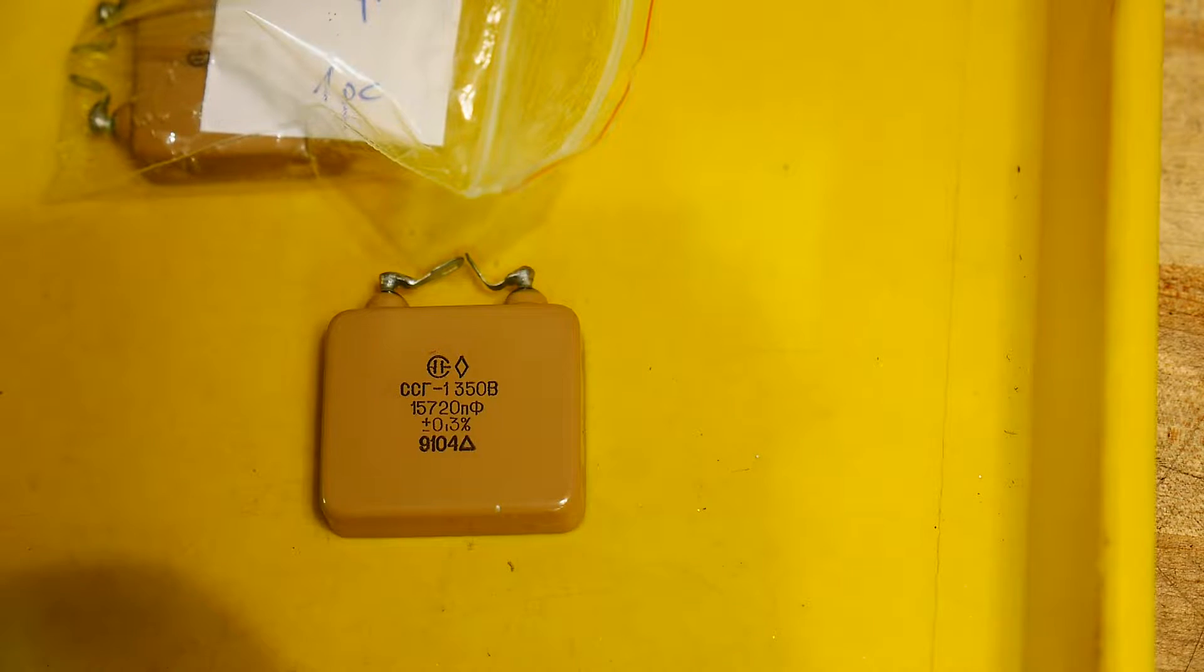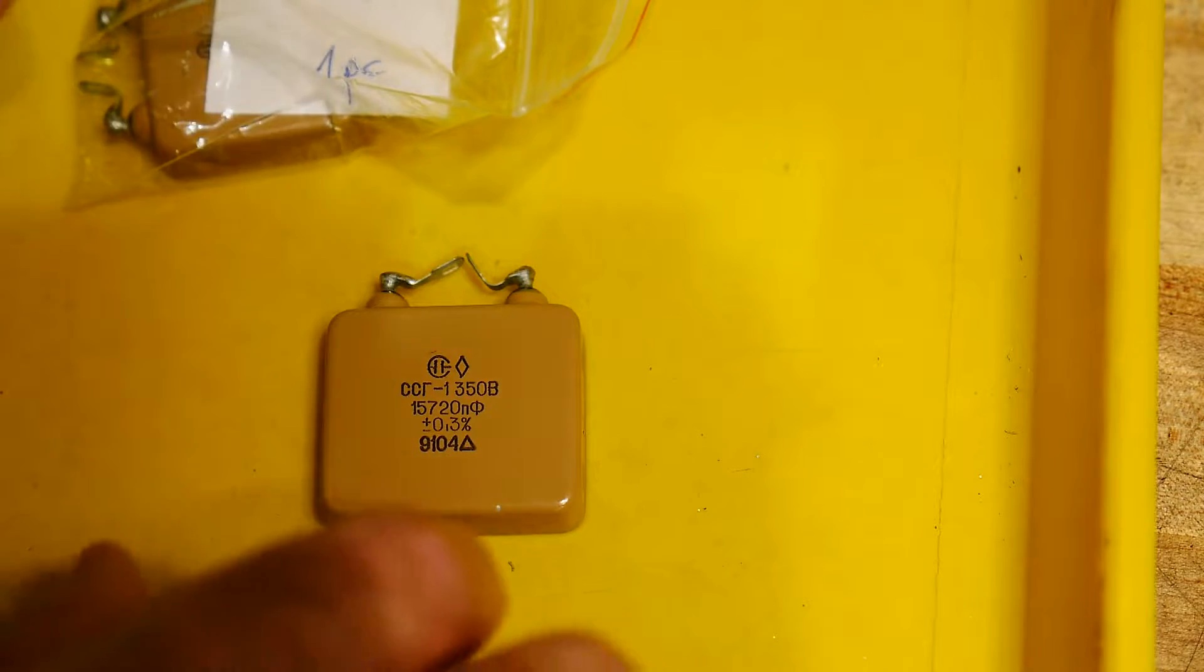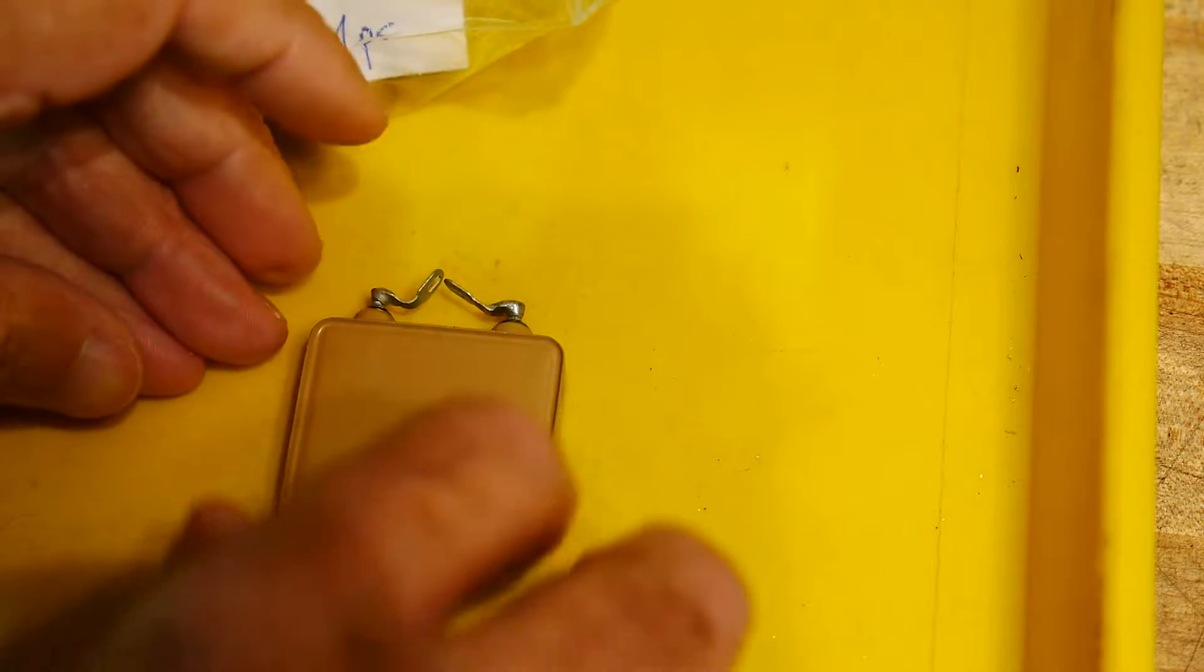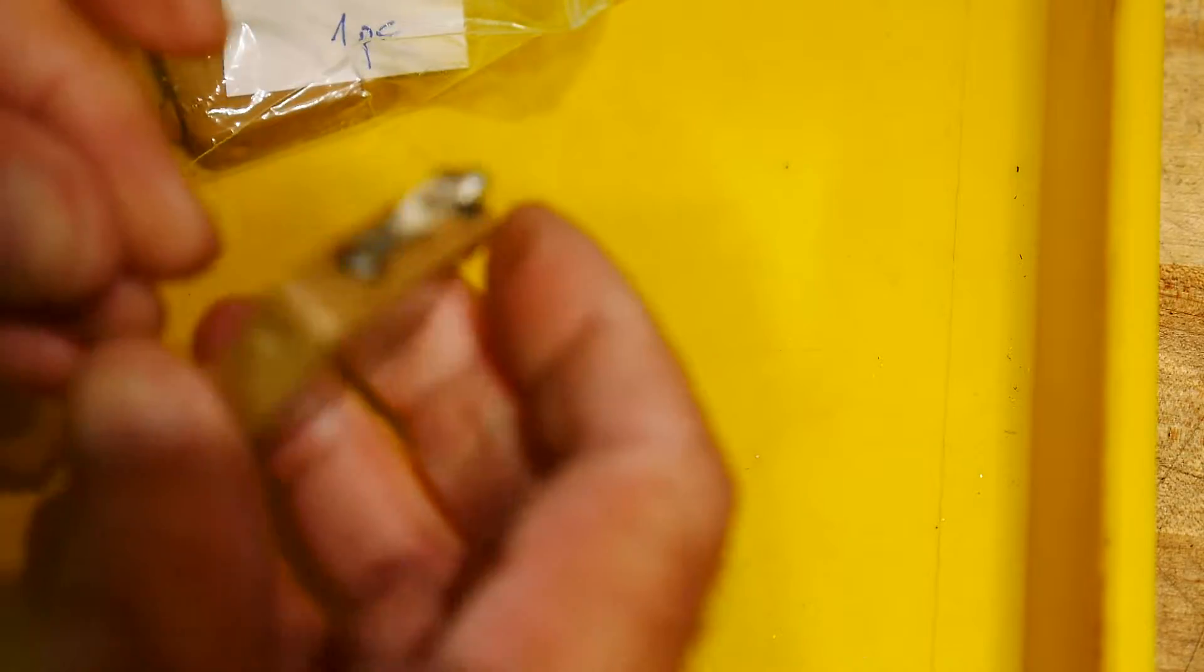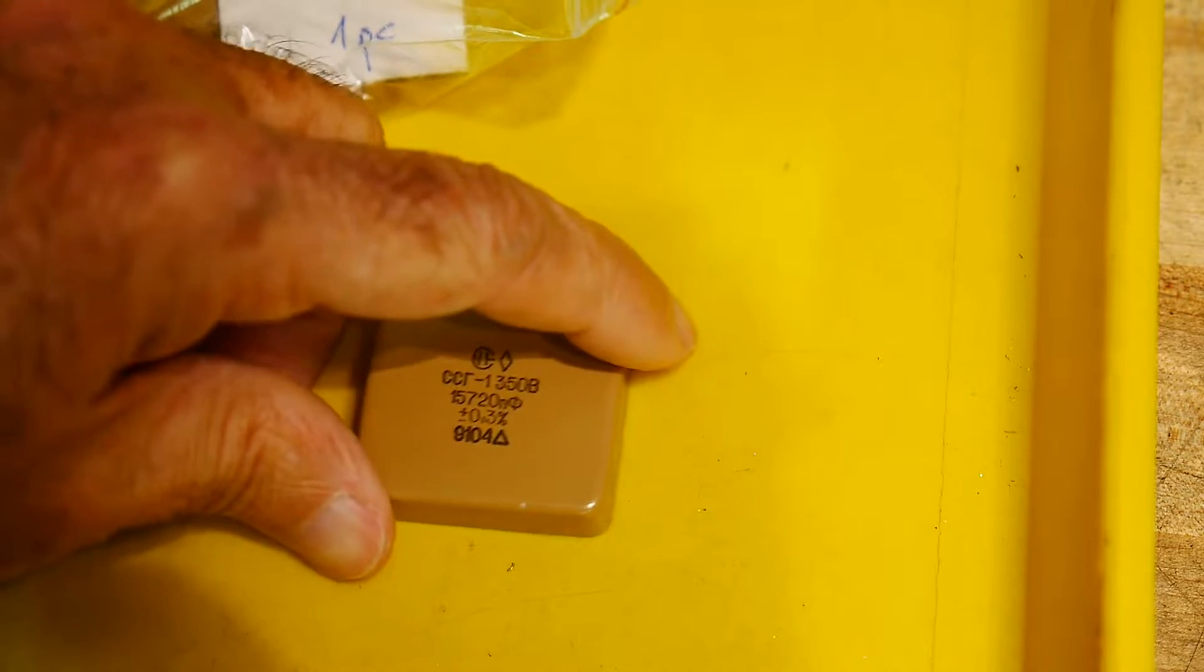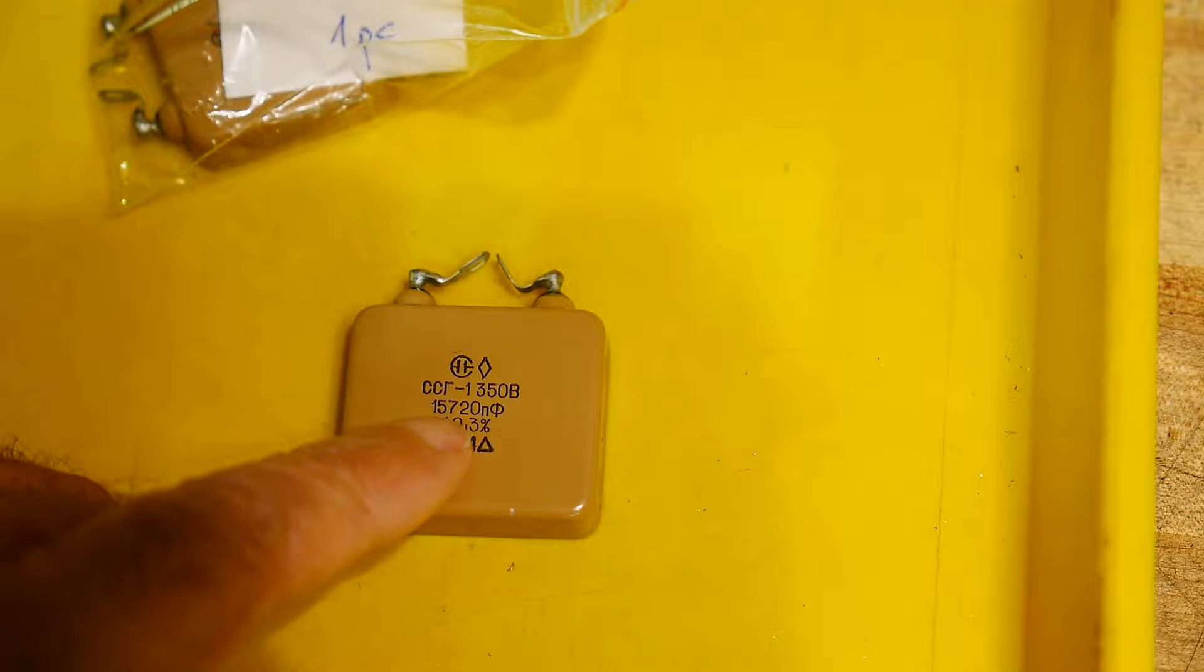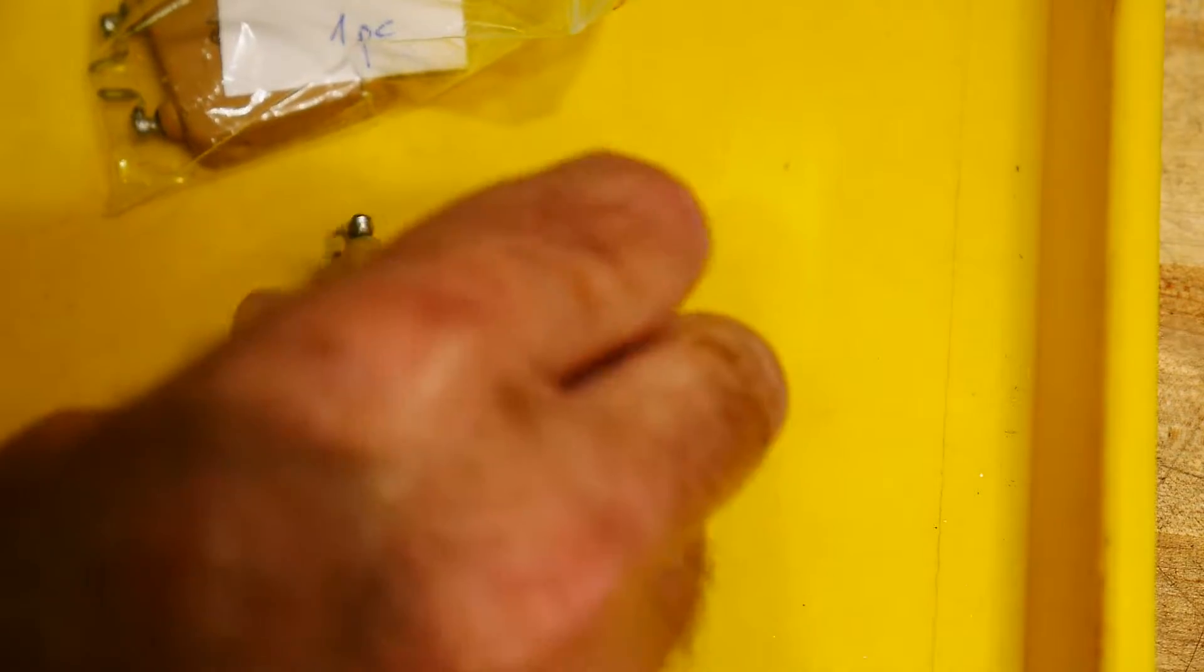This is 0.3 percent. These are silver mica capacitors, they must be hand adjusted and they're hermetically sealed in a metal can. They have little glass feed-through standoffs, they're quite interesting. This one is 15,720 picofarads, so interesting values as well.